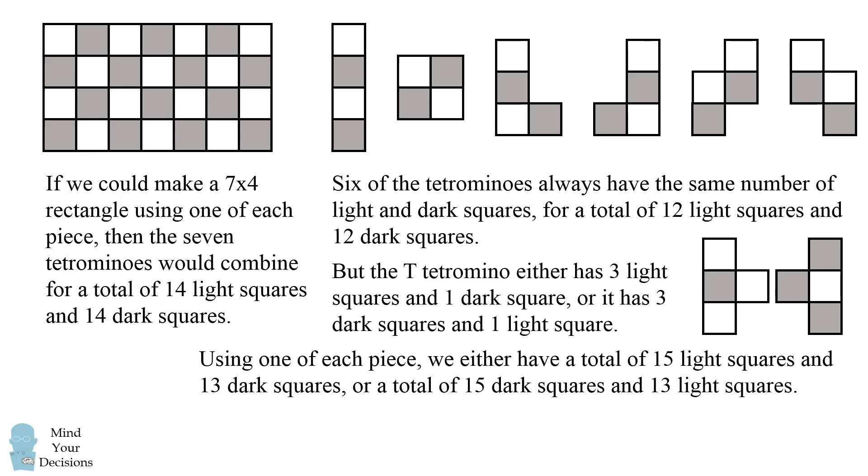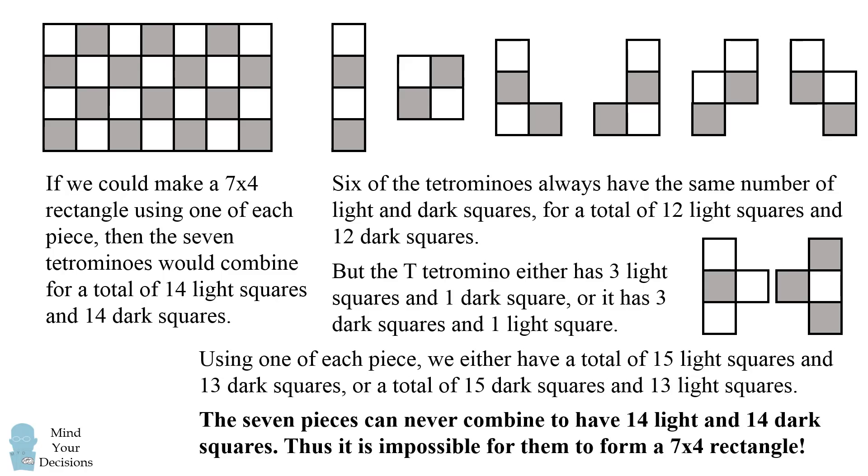Using one of each piece we will either have a total of 15 light squares and 13 dark squares, or a total of 15 dark squares and 13 light squares. The seven pieces can never combine to have exactly 14 light squares and 14 dark squares. Thus it is impossible for them to form a 7 by 4 rectangle.